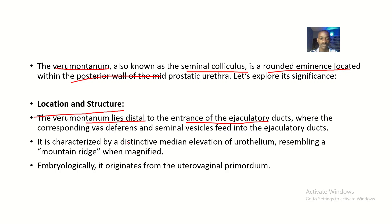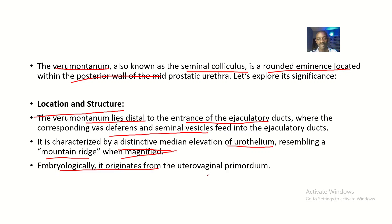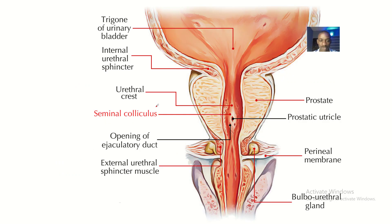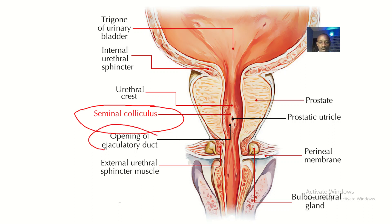The verumontanum lies distal to the entrance of the ejaculatory ducts, where the corresponding vas deferens and seminal vesicles feed into the ejaculatory ducts. It is characterized by a distinctive median elevation of urothelium resembling a mountain ridge when magnified. Embryologically, it originated from the uterovaginal primordium.